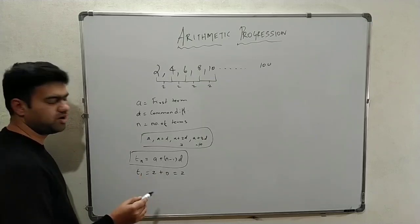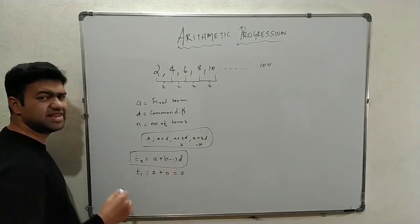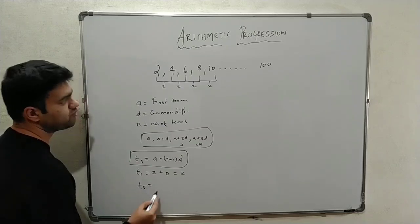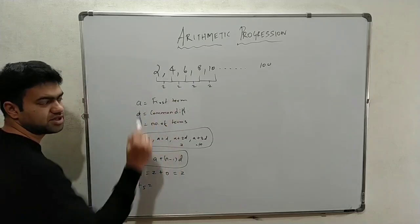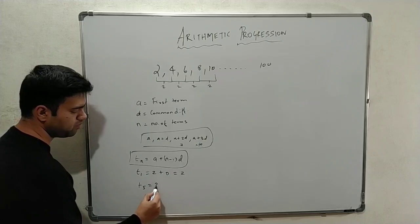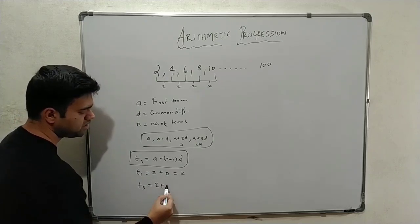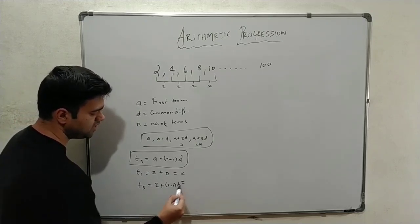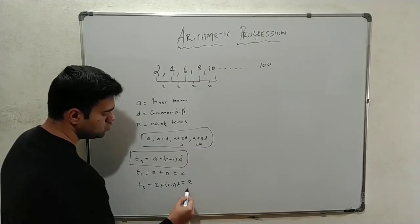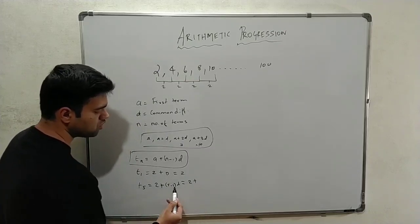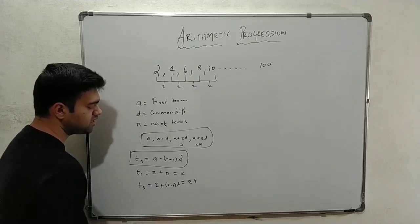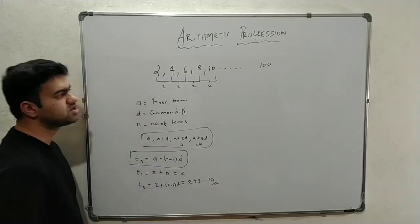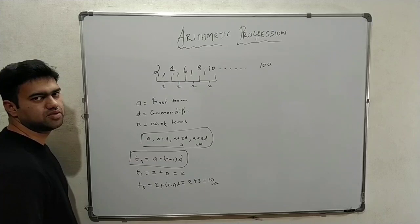Very simple formula: a plus (n minus 1) times d. For example, the 5th term: T5 equals 2 plus (5 minus 1) into d. That is 2 plus 4 times 2, which equals 2 plus 8, equals 10. So the fifth term is 10.